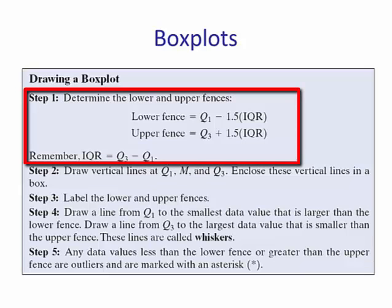The lower fence, Q1 minus 1.5 times IQR. The upper fence is Q3 plus 1.5 times IQR. Now if you remember, IQR is Q3 minus Q1.